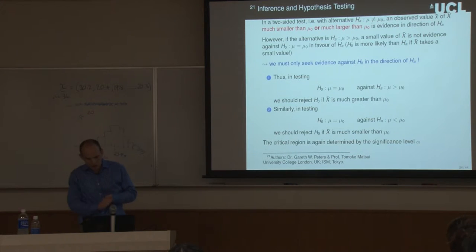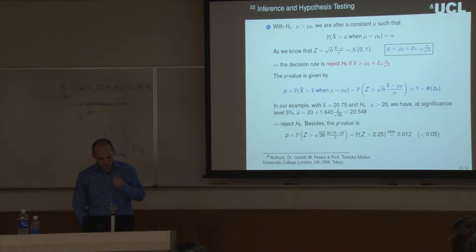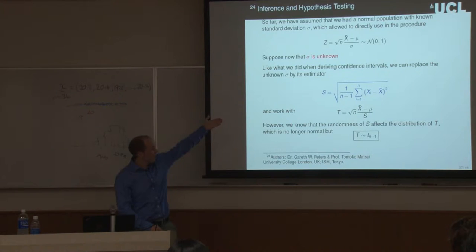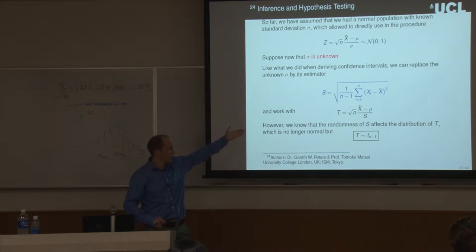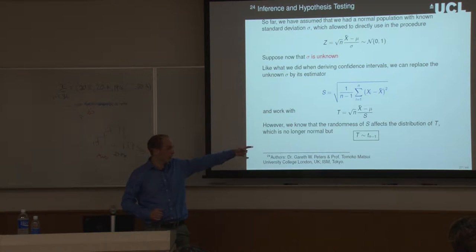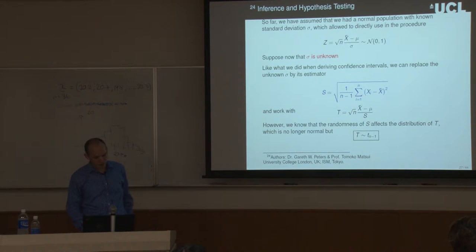We covered up to this point last time. We also started talking about when we don't know the variance, which is the case in practice. We estimate the variance using S. We plug this into the denominator to get the T statistic instead of the Z statistic, and we use the T distribution with n minus one degrees of freedom. This is similar to the normal distribution tables — we just look up T distribution tables with n minus one degrees of freedom.